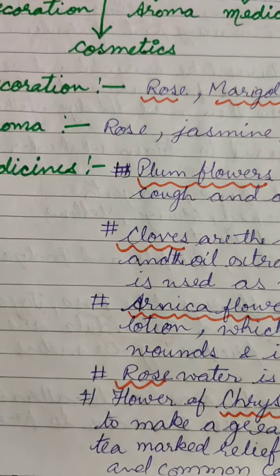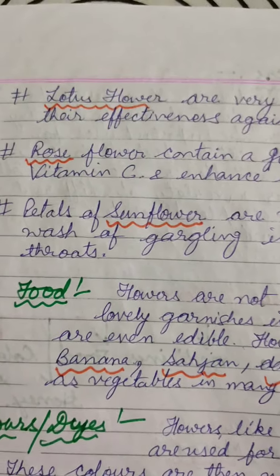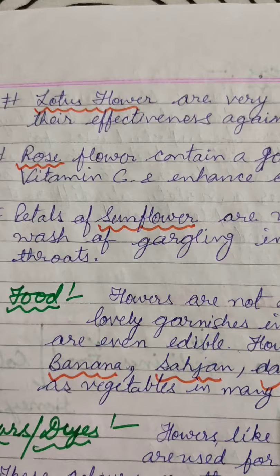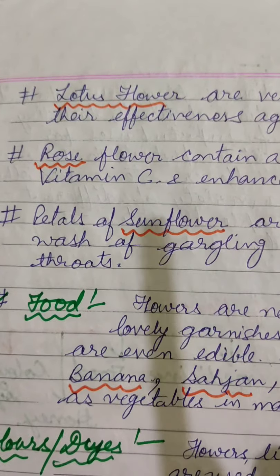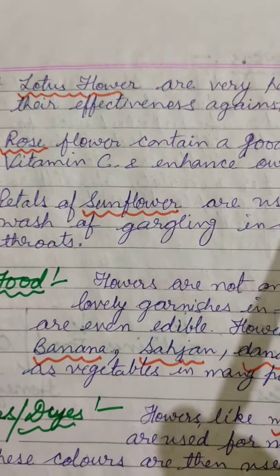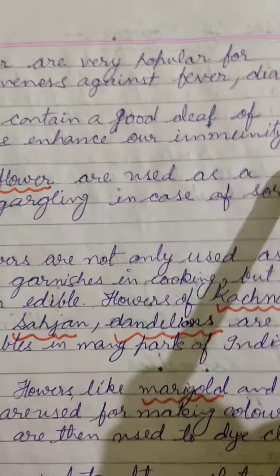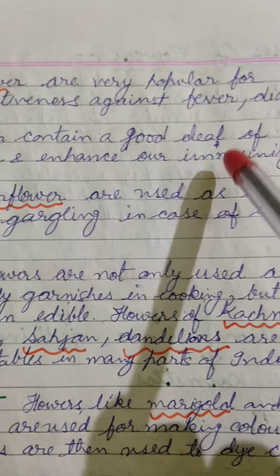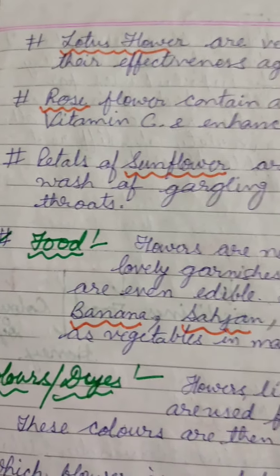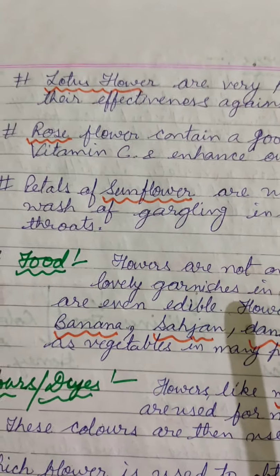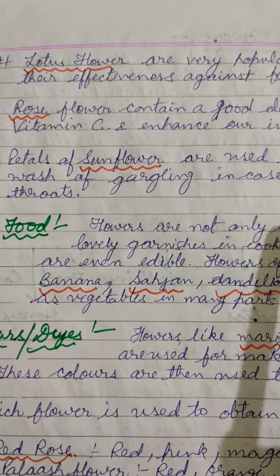Our national flower is the lotus. The lotus flower also has medicinal value — it is very effective against fever and diarrhea. The rose flower, liked by almost all people, contains a good amount of vitamin C and enhances our immunity, meaning the power of our body to fight against disease. To enhance immunity, we can take the petals of the rose in our diet. The petals of the sunflower are used as a gargling wash in case of sore throat.